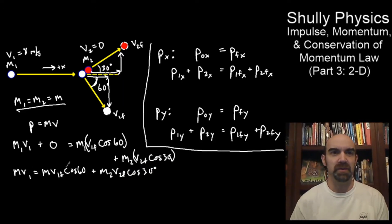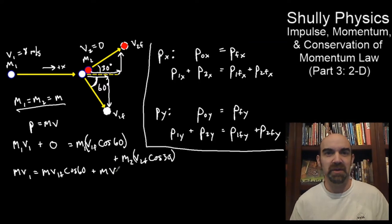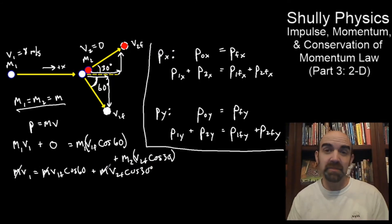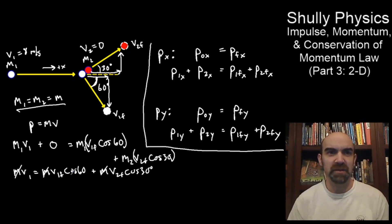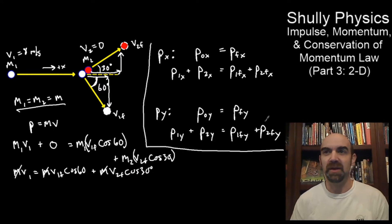Now we can simplify since all the masses are the same. We rewrite this as mv1 equals mv1 final cosine 60 plus mv2 final cosine 30. You see an m in all these terms, so if we divide both sides by m, all those m's cancel. We have an expression where we know v1 is 8, but we have two unknown final velocities to figure out.